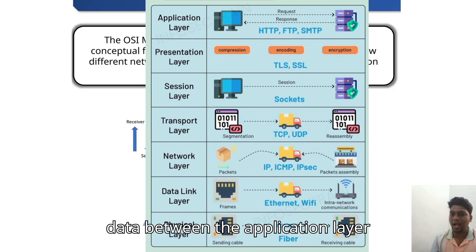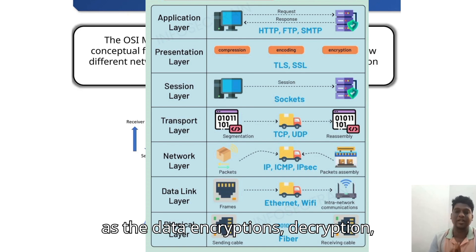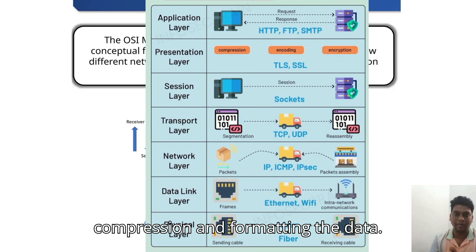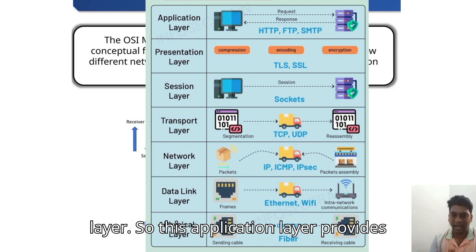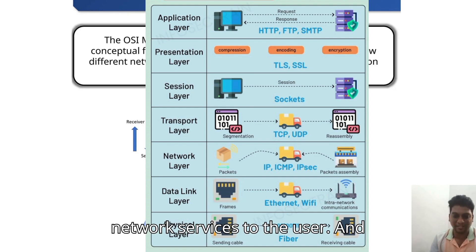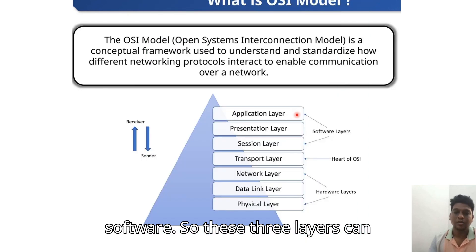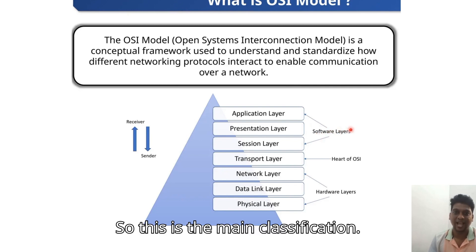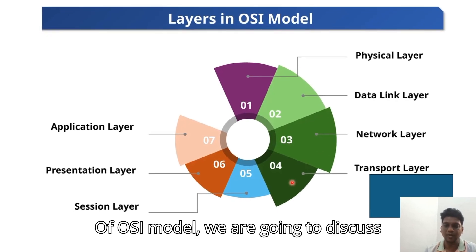The fifth one is the Session layer, which manages the session between applications. The sixth one is the Presentation layer — it translates data between the application layer and the network, handling encryption, decryption, compression, and formatting. The final layer is the Application layer, which provides network services to the user and interfaces with the application software. These three layers can be called software layers.